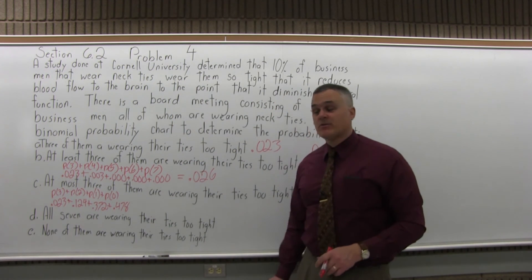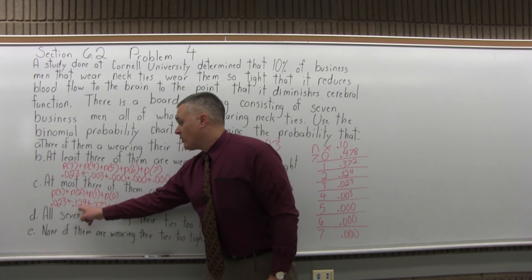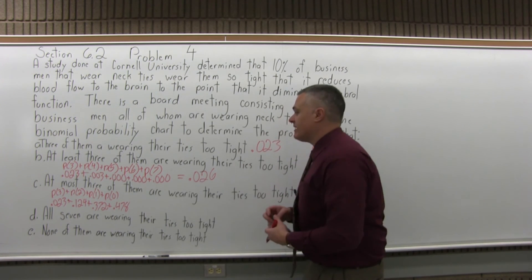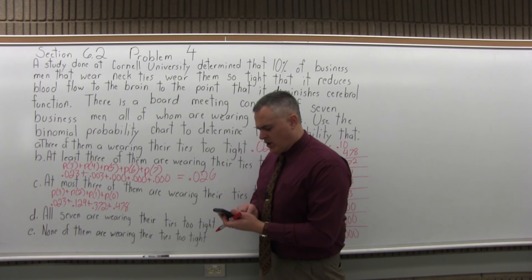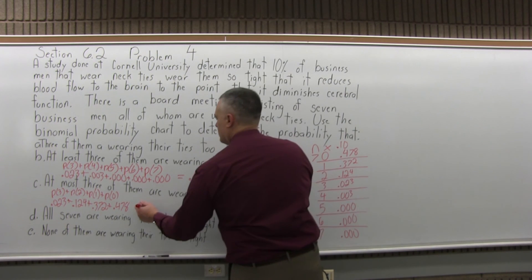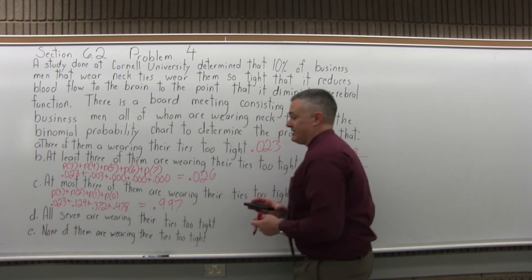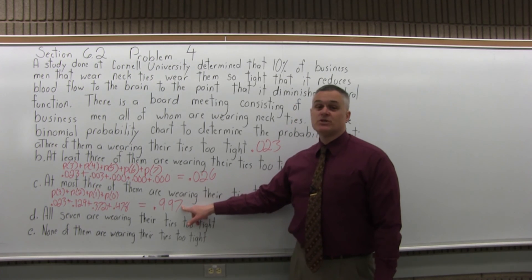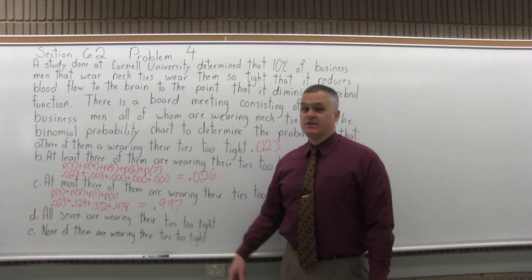Now to get the overall answer, I'm going to add .023, plus .124, plus .372, plus .478, which I can do more easily with a calculator. .023, plus .124, plus .372, plus .478. The calculator tells me the answer is .997. It's almost a 100% chance, more than 99%, even very close to 100%. It's almost a sure thing that at most three have their tie on too tight.